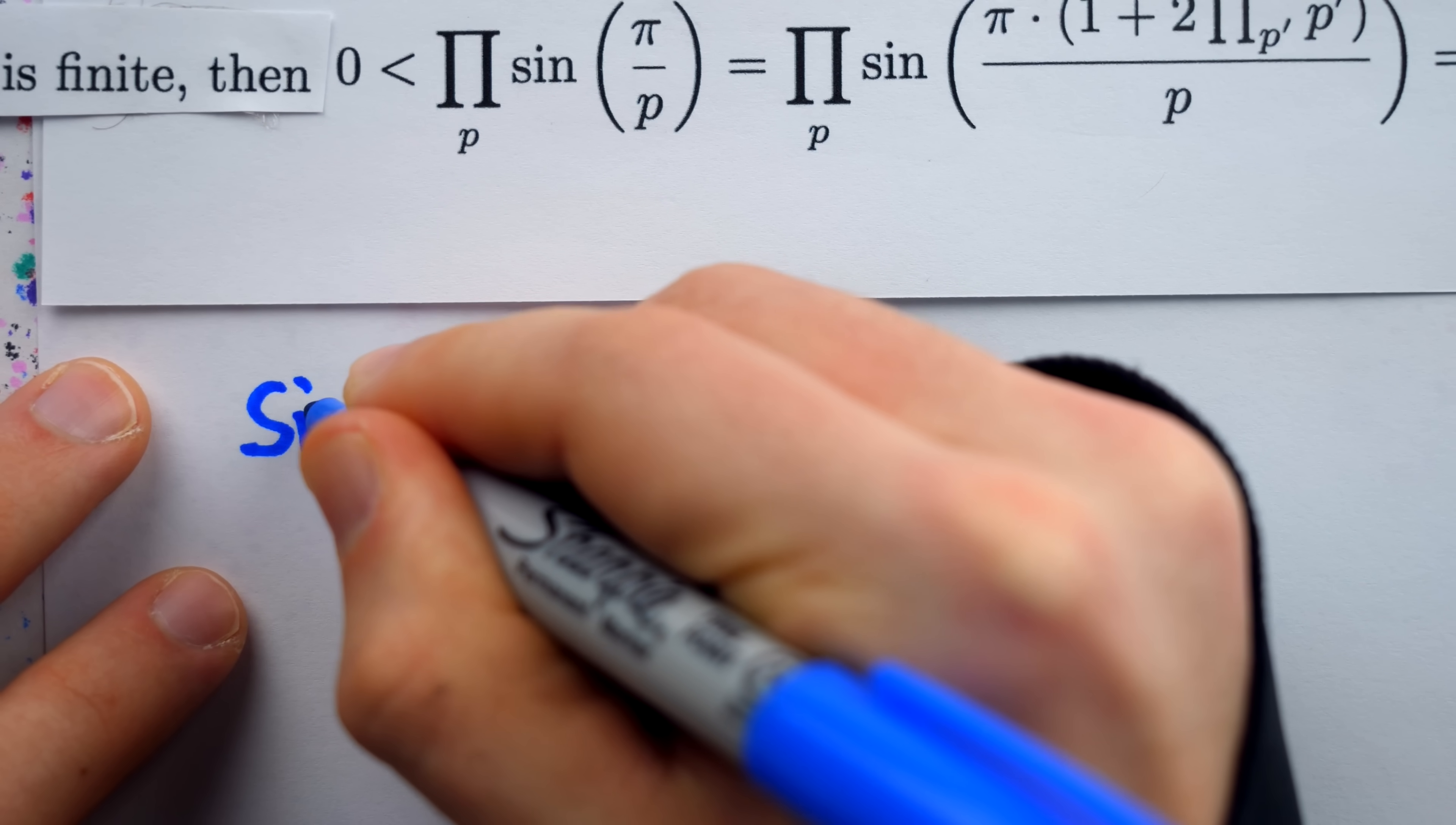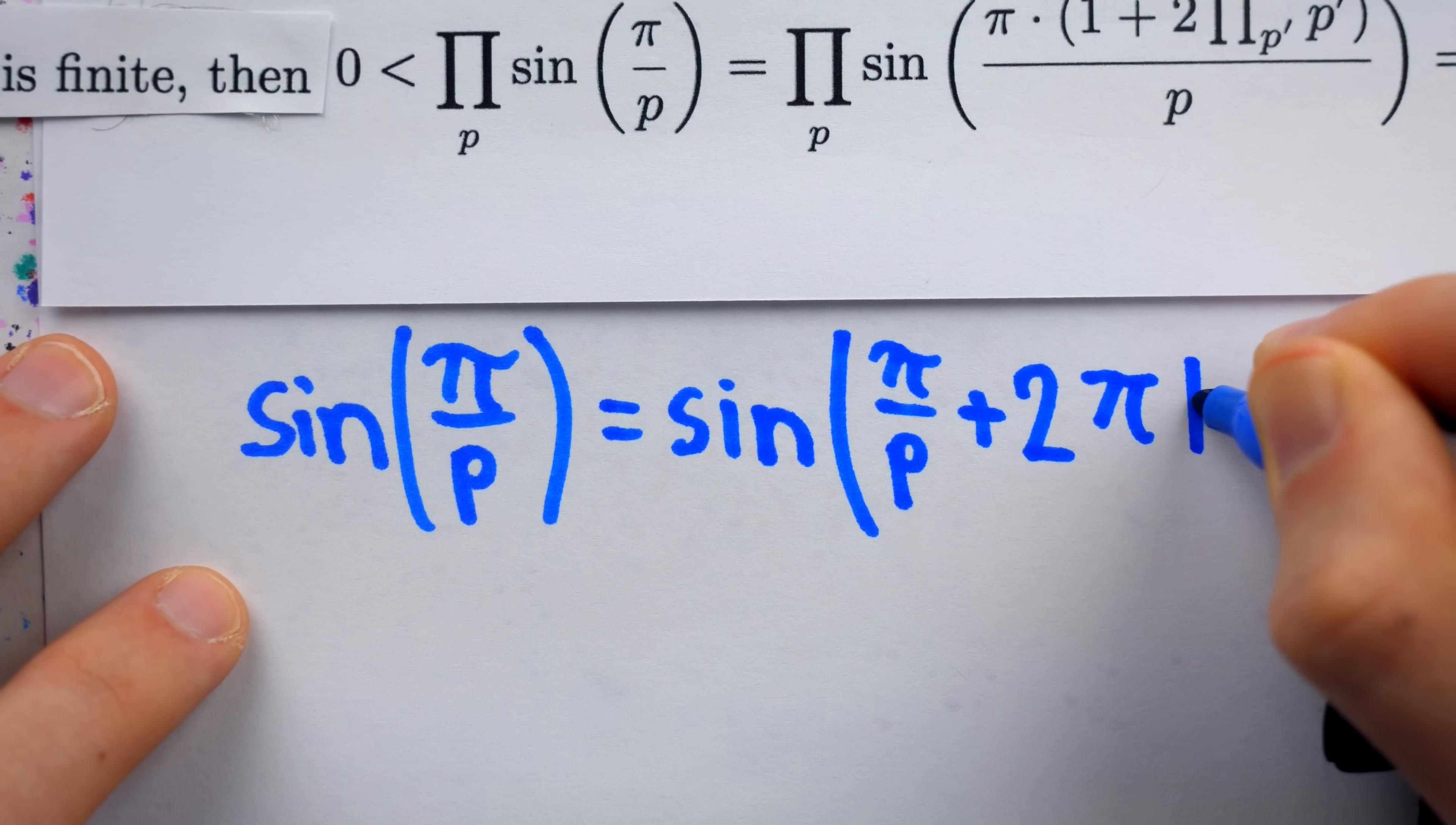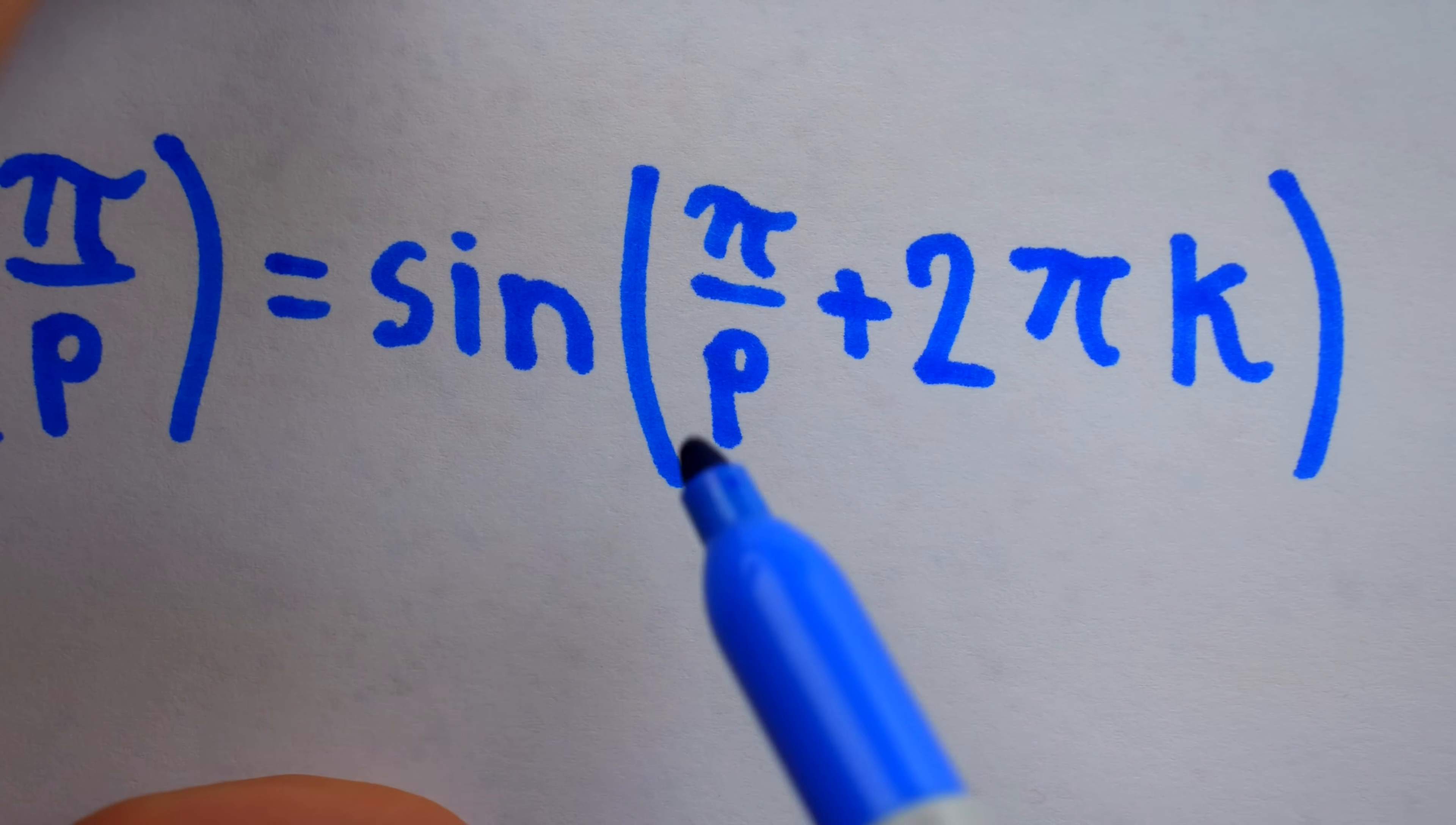So certainly, sine of pi over p is the same as sine of pi over p plus 2 pi times k for any integer k. And if we go ahead and distribute the pi in this expression, we'll see that it's really the exact same sort of thing.